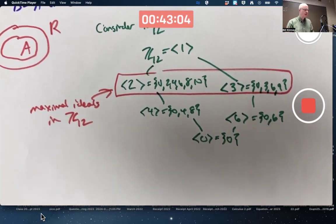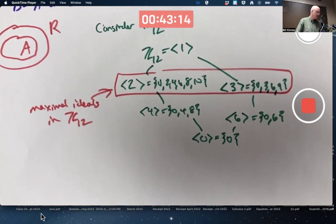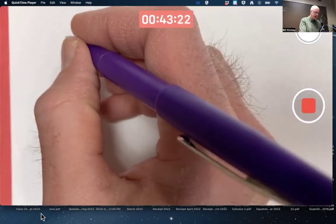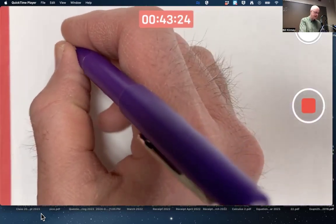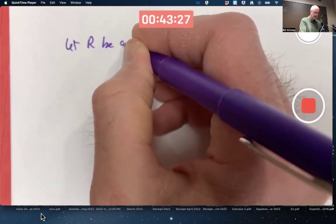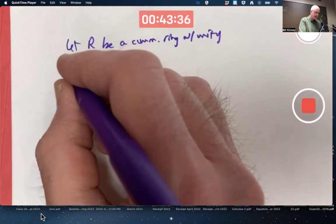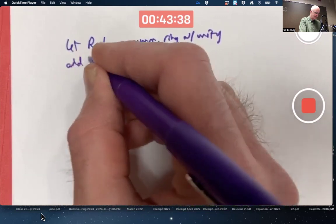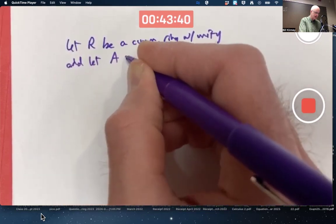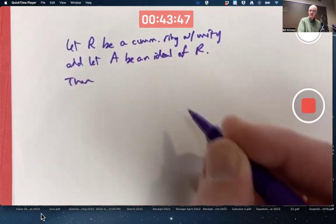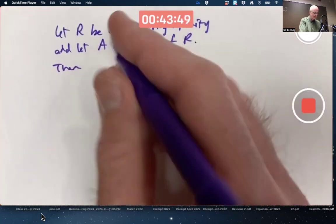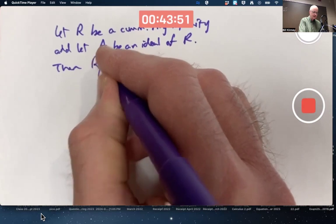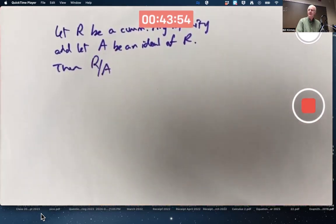We do have an important theorem, very fundamental theorem. The last theorem in chapter 14 says, let R be a commutative ring with unity and let A be an ideal of R. Then, it's very similar to the previous theorem we looked at, the factor ring R by A. In the last theorem, this was an integral domain if and only if A was a prime ideal.